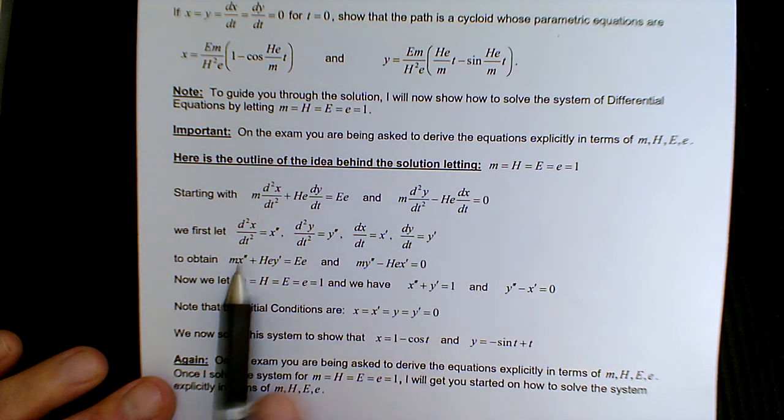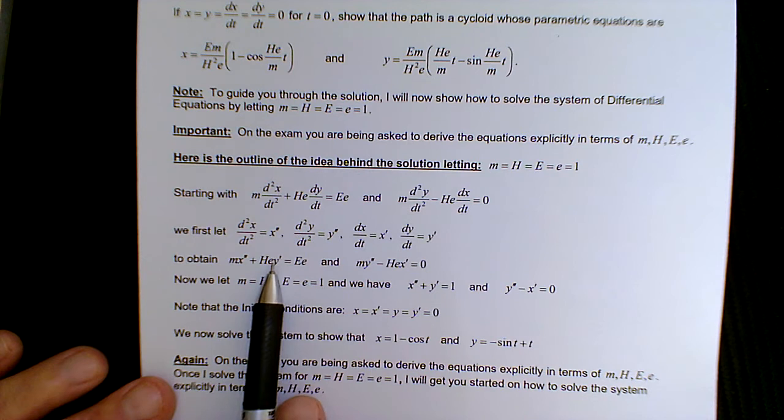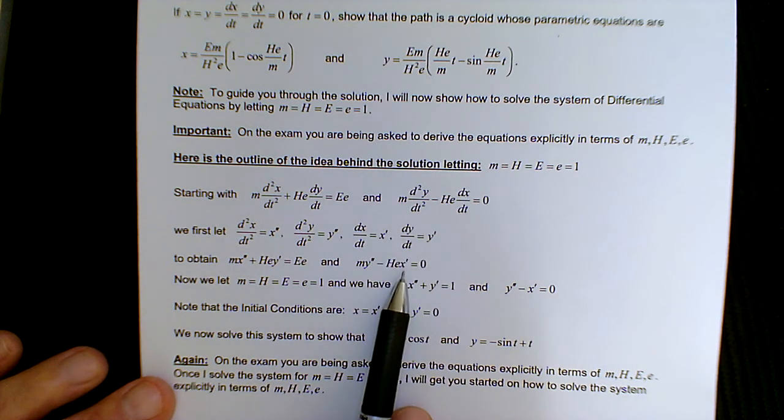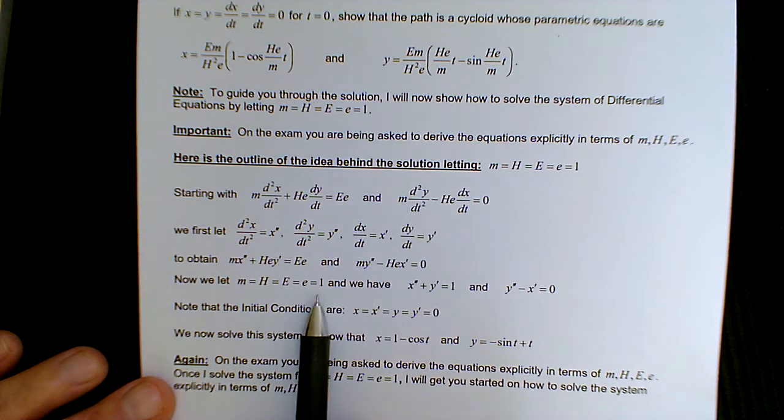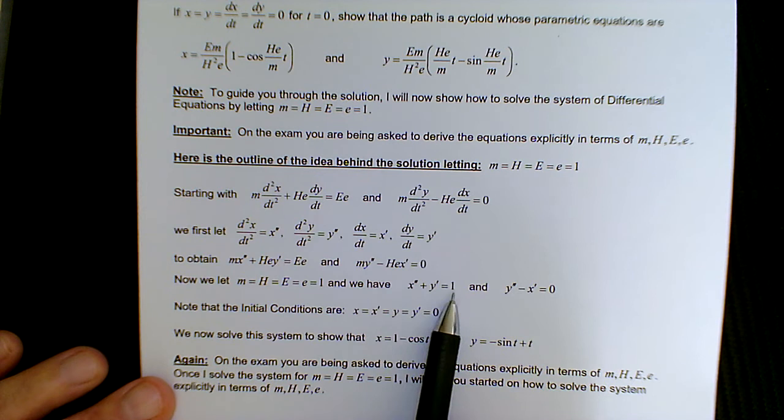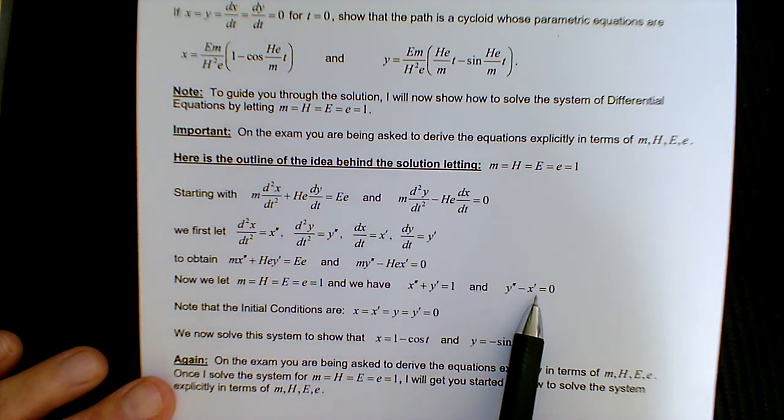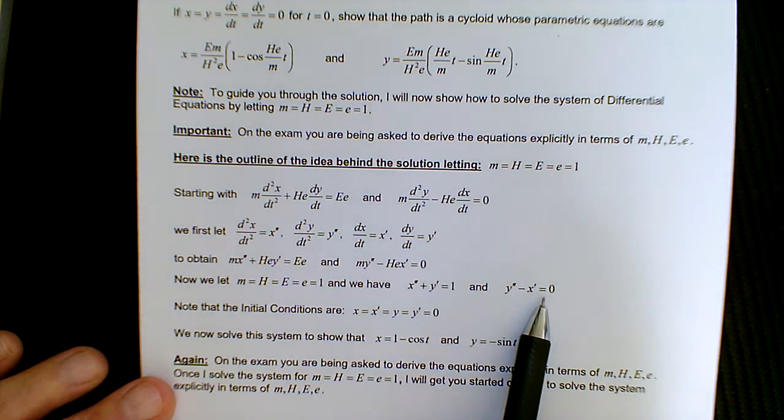So again, there's your x double prime, here's your y prime, this is your y double prime, and here's your x prime. Now I'm going to let everything equal 1, except, of course, for the variables x and y. And then we reduce to these two equations: x double prime plus y prime is 1, and y double prime minus x prime is 0. So those are the two equations I'm going to start with.